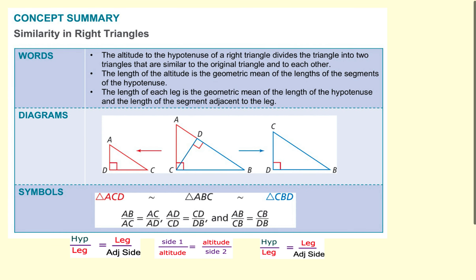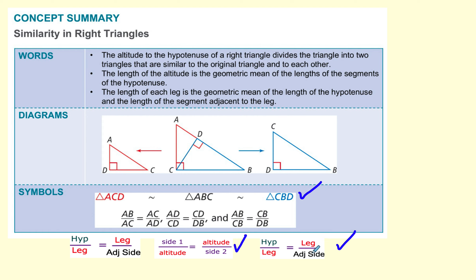In summary, we learned three theorems. One: this diagram contains three similar triangles. Two, from yesterday: the altitude is the geometric mean between the two parts of the hypotenuse. Three, from today: each leg is the geometric mean between the whole hypotenuse and the portion of the hypotenuse adjacent to that leg.